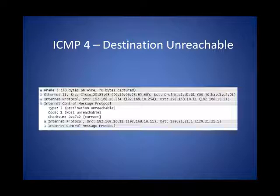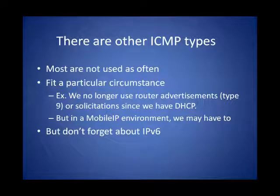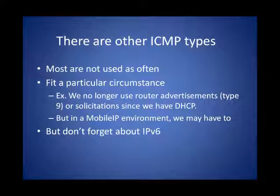By now you've realized that ICMP messages are actually pretty simple — they contain the type and code, and sometimes some additional pieces of information. There are quite a few ICMP messages defined, and some types have several codes associated with them, but a lot are no longer used or not very common. Solicitations and advertisements come to mind, though depending on your environment those may be implemented — for example, in a mobile IP environment we need router advertisements and router solicitations. And while we don't use them currently, the minute you move to IPv6, there's an awful lot of ICMP traffic that goes on as part of what is called the neighbor discovery process — it'll be ICMPv6.